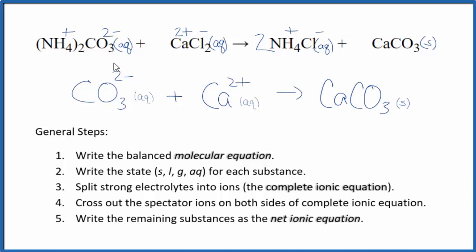And this is the balanced net ionic equation for NH4 2CO3 plus CaCl2. Charge is conserved. We have this two minus and this two plus. They balance out, give us a net charge of zero. Our calcium carbonate, that has a net charge of zero. It's a neutral compound. Sometimes you'll see the positive ion put first. It doesn't really matter. It's the same net ionic equation.